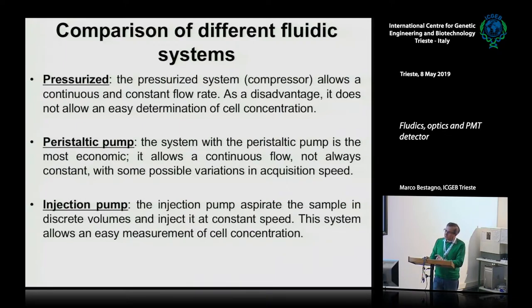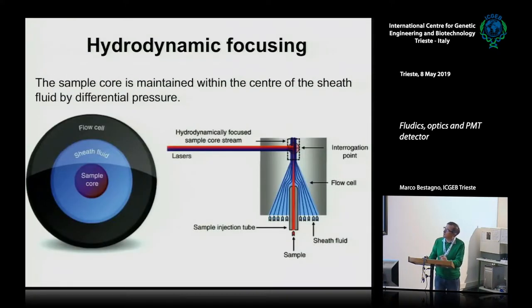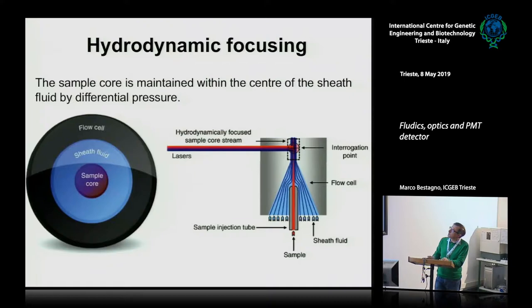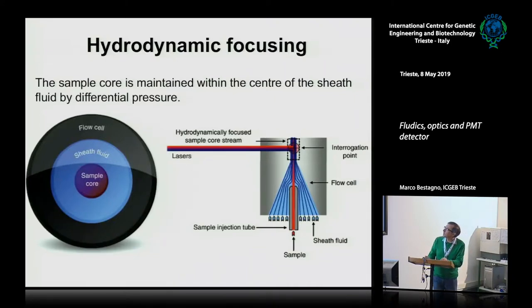Whichever system is used, the main principle of flow cytometric analysis is hydrodynamic focusing: the sample core is maintained within the center of the sheet fluid. This is a cross-section of the flow cell — the sample core is maintained in laminar flow inside the sheet fluid. This is obtained by giving differential pressure to the sheet fluid and the sample; the pressure of the sample is always higher than the pressure of the sheet fluid. The sample is injected into the stream of sheet fluid and stays in laminar flow through the flow cell where it is excited by the lasers.